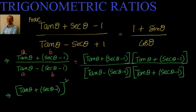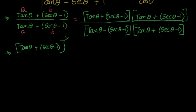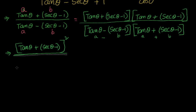So the numerator becomes (tan θ + sec θ − 1) whole squared. The denominator uses the identity (a + b)(a − b) = a² − b², giving us tan²θ − (sec θ − 1) whole squared.